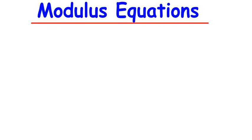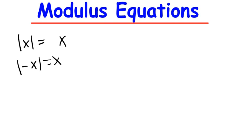Let's begin our discussion with a simple concept. Whenever we are talking about Modulus, we mean something is in Modulus — like this. So we have x in the Modulus. The Modulus of x is x. The Modulus of negative x is actually x. So anything that comes out from the Modulus should be positive. That's the principle.